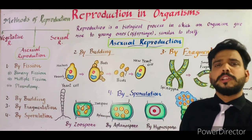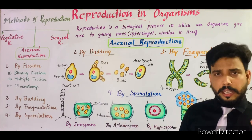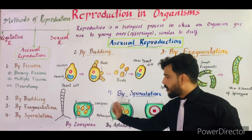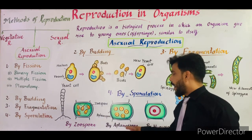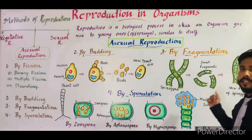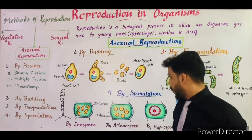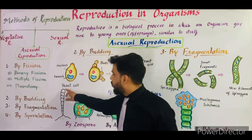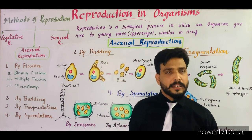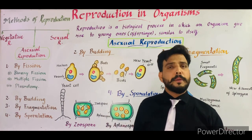There are four kinds of spores seen in Ulothrix. The first is the zoospore, the second is the aplanospore, the third is the hypnospore, and the last is the palmella stage. For the zoospore: the cells of Ulothrix contract, the cytoplasm contracts, and the nucleus divides into numerous segments.